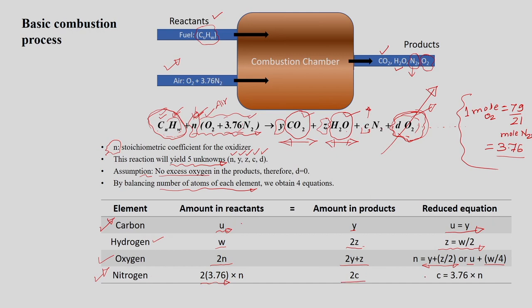The nitrogen balance gives C = 3.76N. This is how we balance the number of atoms of each element in the combustion reaction and the stoichiometric equation. We can also balance this equation when excess air is used — there will be slight changes in values, but the same approach applies.